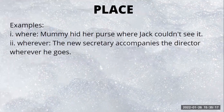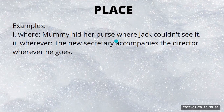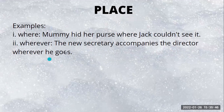Next is the subordinating conjunction of place — it indicates the place of an event or where an action occurs. Example: 'where': 'Mommy hid her purse where Jack couldn't see it.' That's the place where she hid it. Then 'wherever': 'The new secretary accompanies the director wherever he goes.'